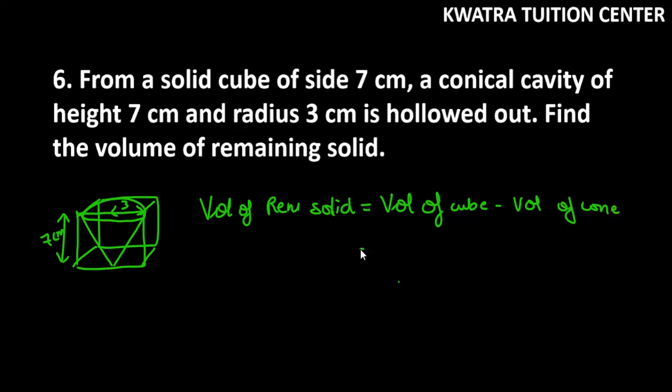The cube volume is a cubed. The cone volume is 1/3 pi r squared h. So a cubed becomes...